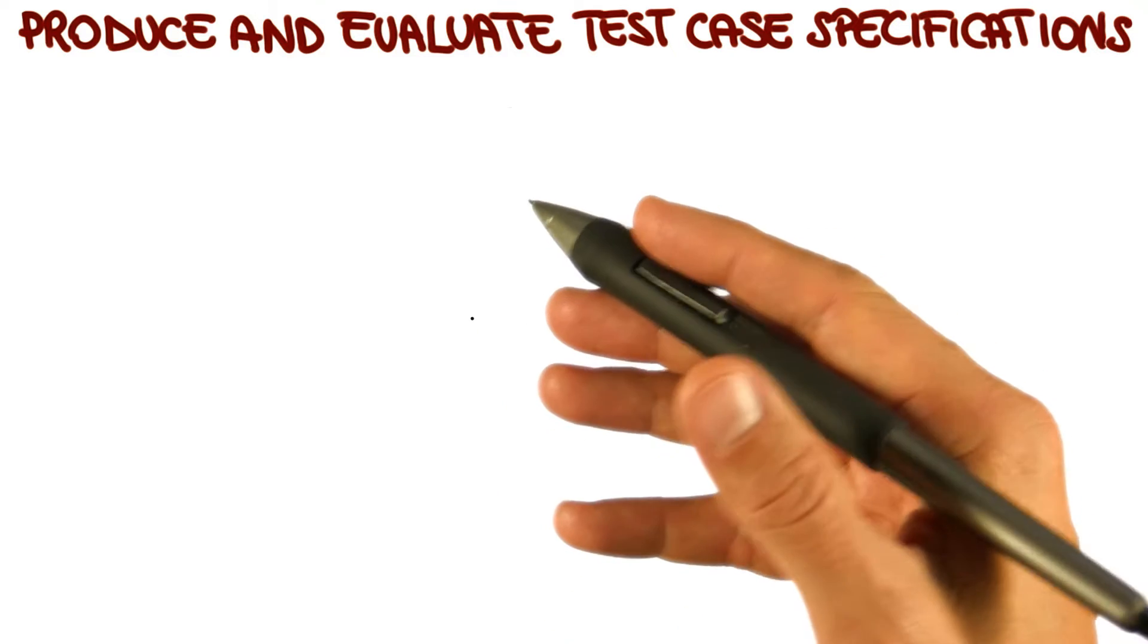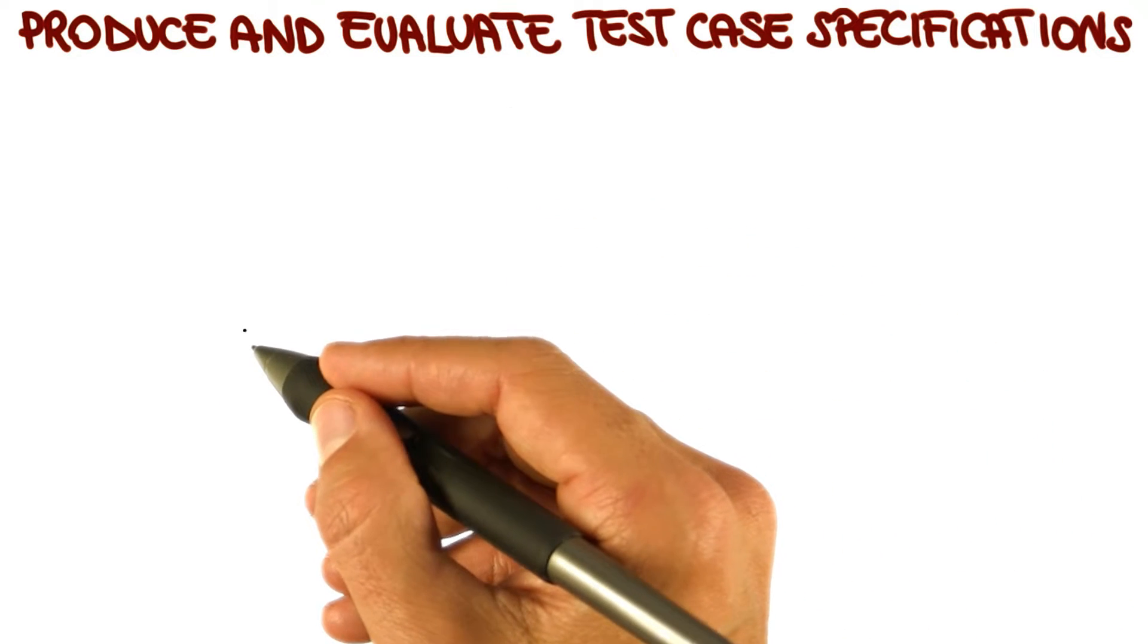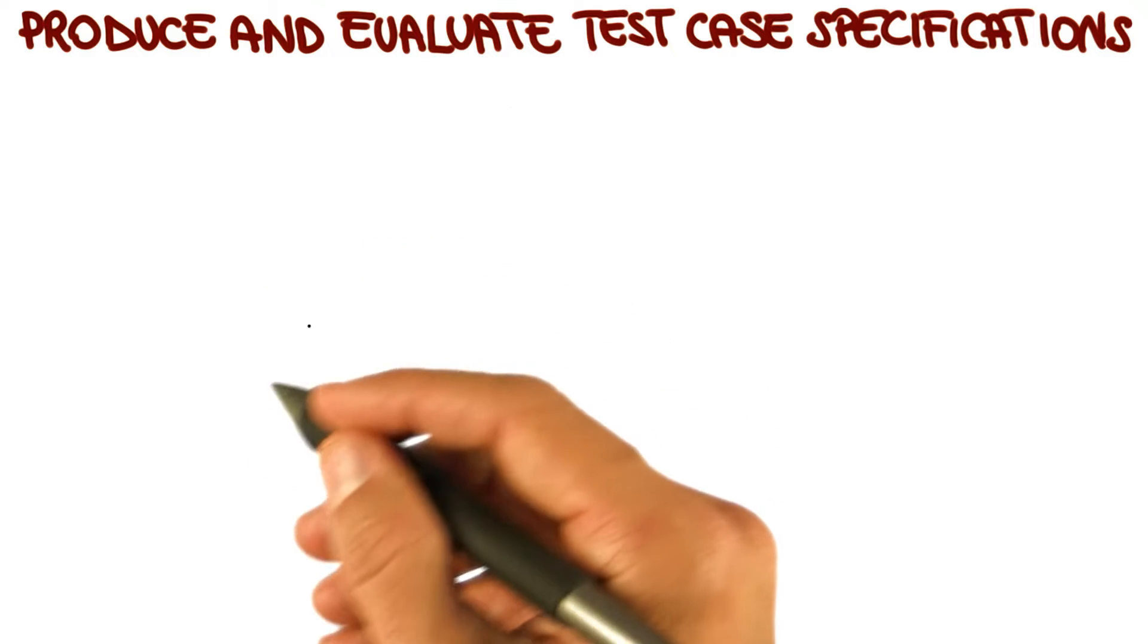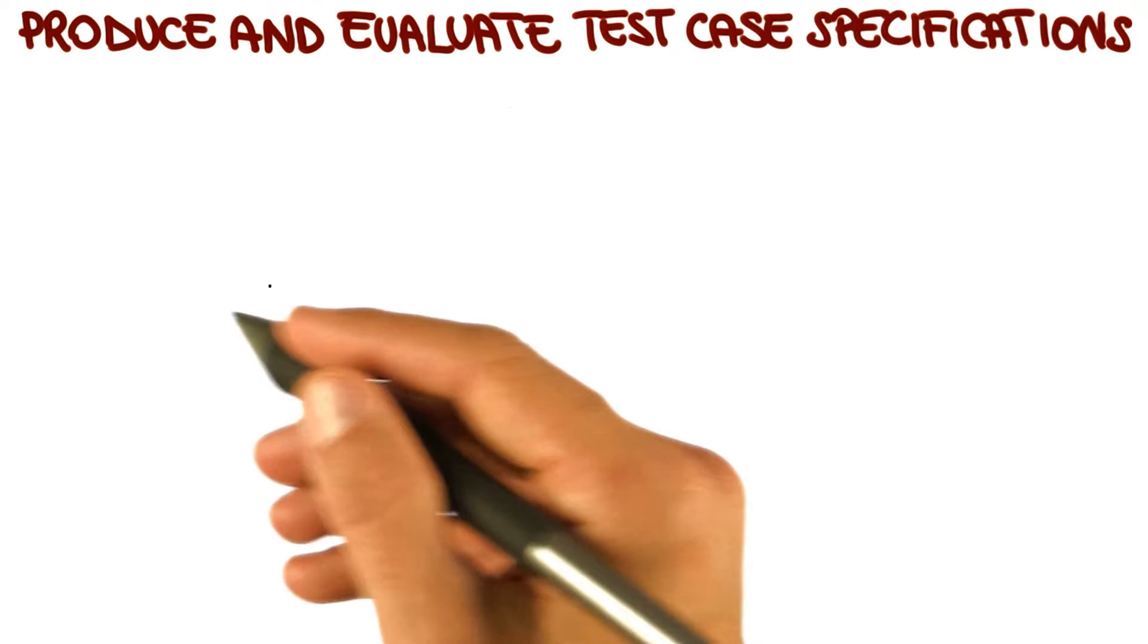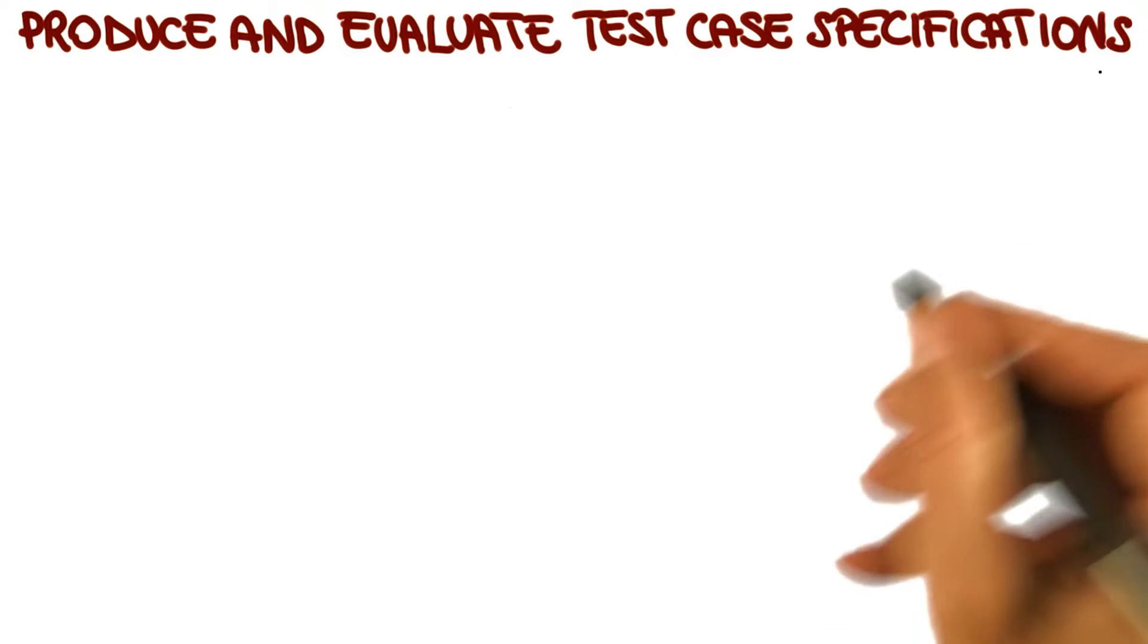Before getting to our demo, we still have two steps to consider. The first step corresponds to the identification of the test case specifications in our general systematic approach. And in fact, it's called produce and evaluate test case specification.